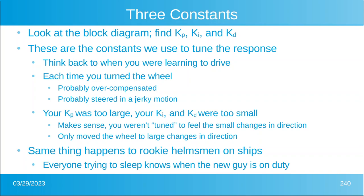Think back about when you were learning to drive. There you are, you're 15, trying to get your learner's permit. Each time that you turned the wheel to change lanes, you probably overcompensated — you probably steered in a jerky motion. From one moment to the next you found yourself with the tires rubbing the white lane, and then you oversteered, and your left tires were on the right lane, and so on back and forth. So your KP was way too large, because as soon as you noticed an error, you overreacted. And your KI and your KD were too small — because you let these things happen before you reacted. You only moved the wheel when you saw a large change in direction.